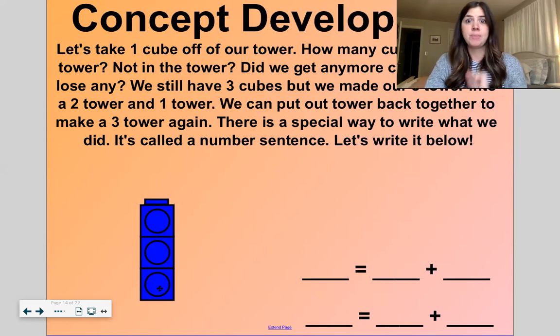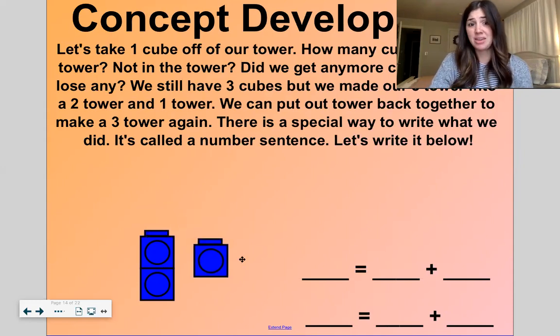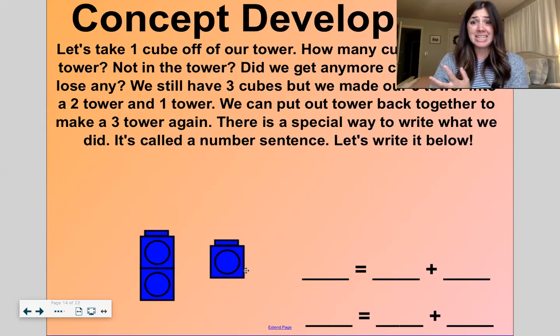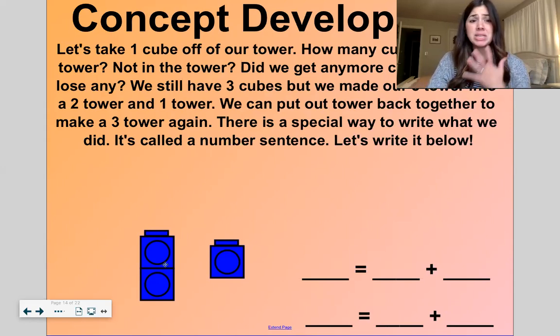Remember we have three cubes in our tower. How many cubes? Three. How many cubes are not in our tower? Zero. Did we get any more cubes? No. We didn't get any more. Did we lose any cubes? No. We still have three cubes and we made our three tower into a two and a one tower, right? If I take one off, then I made it into a two and a one tower, but I didn't get any more cubes and I didn't take away any cubes. I just took my tower apart. So I still have three.